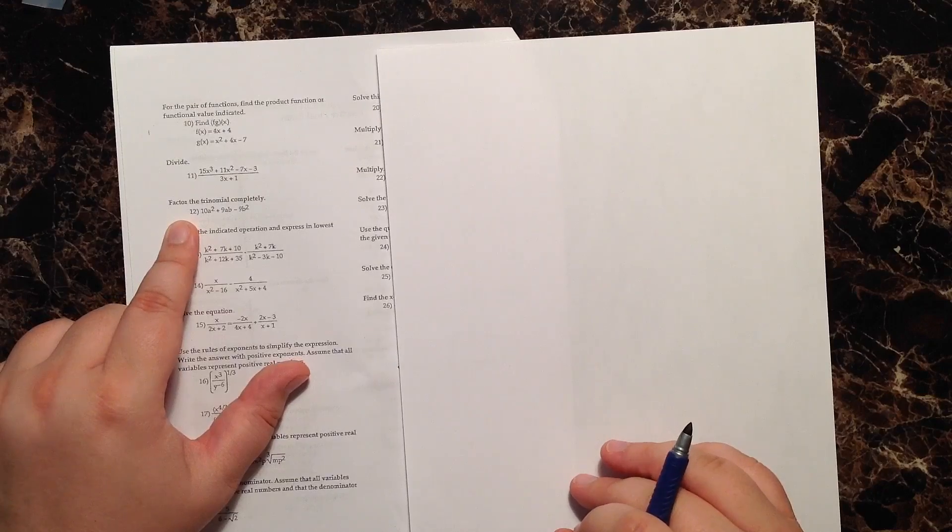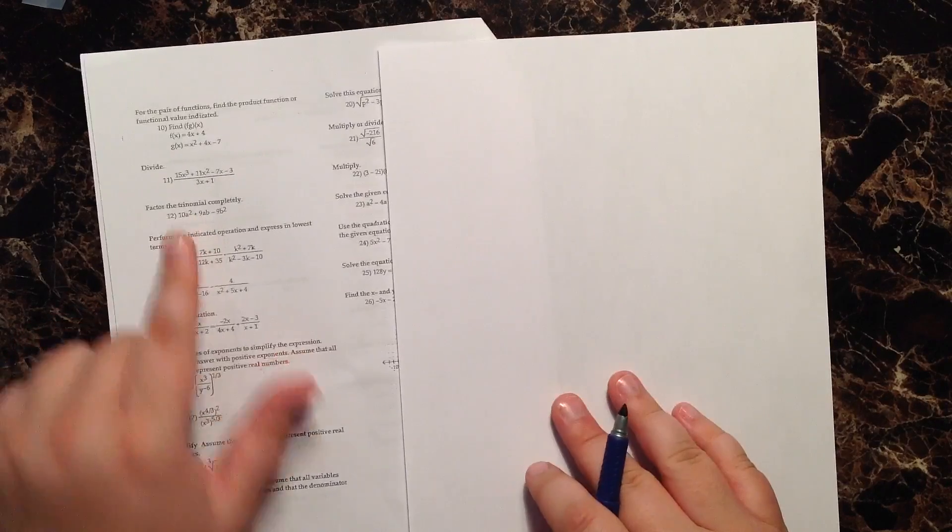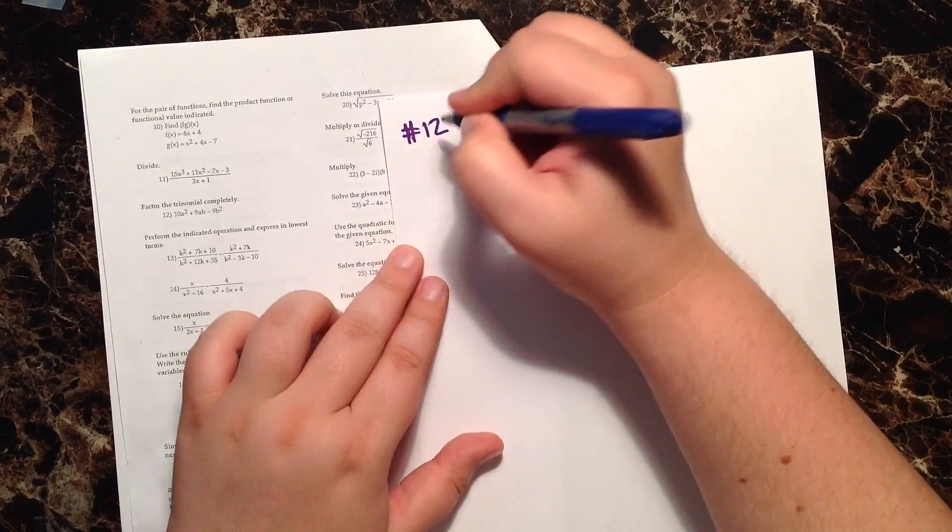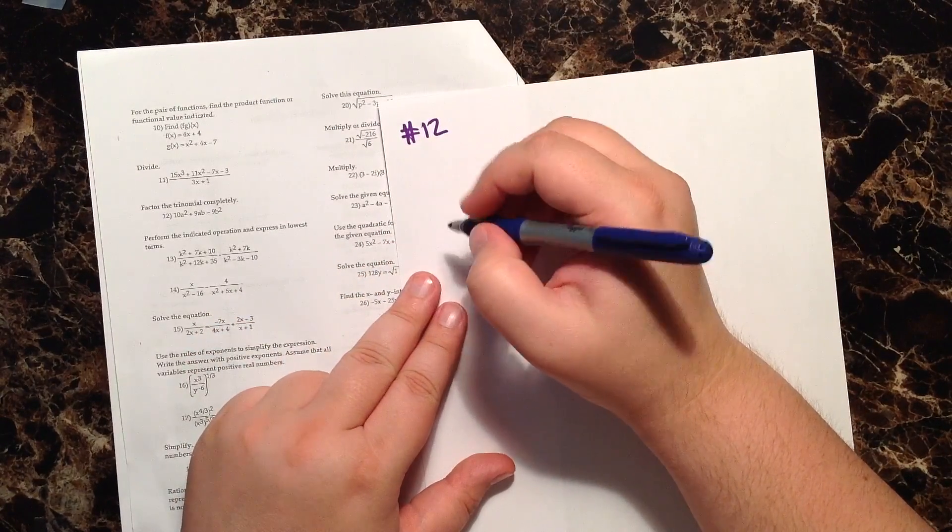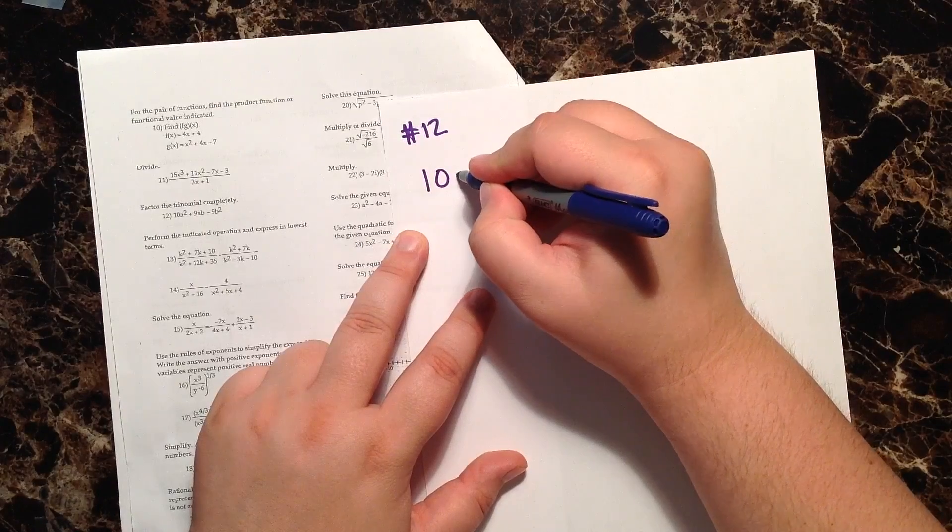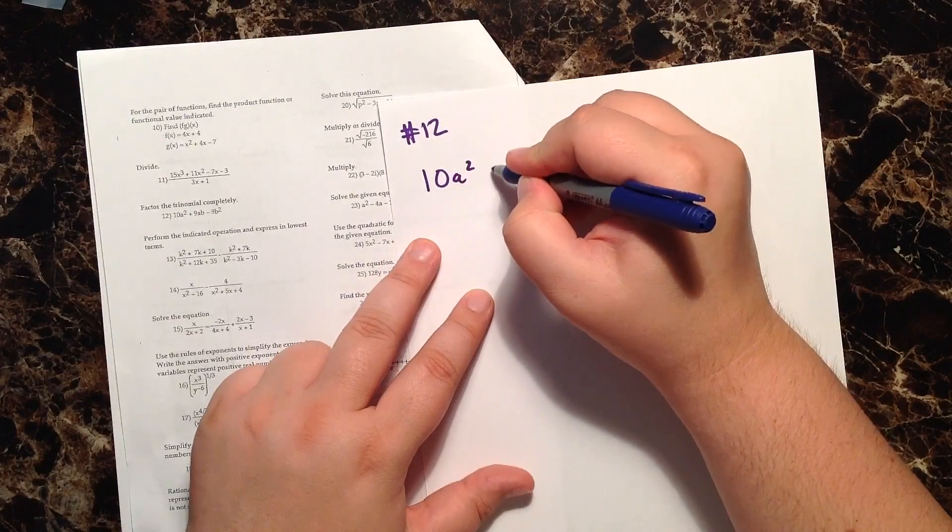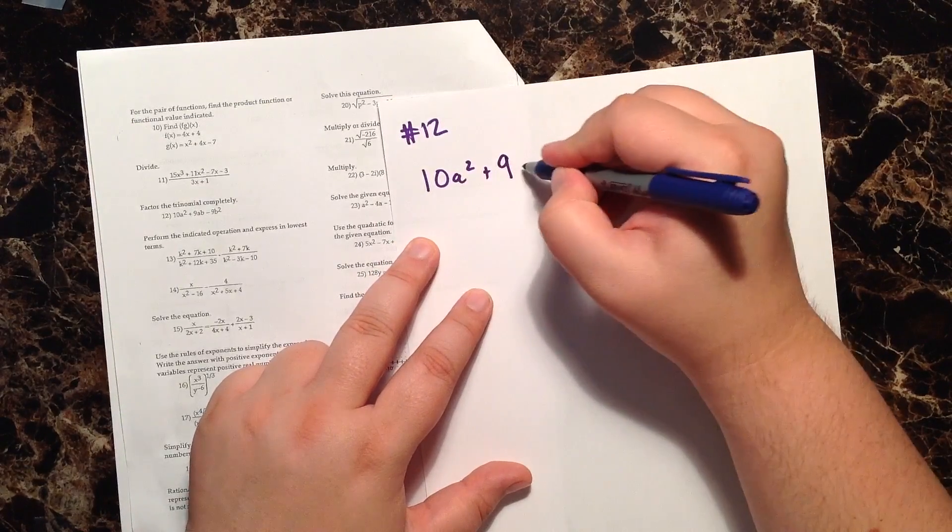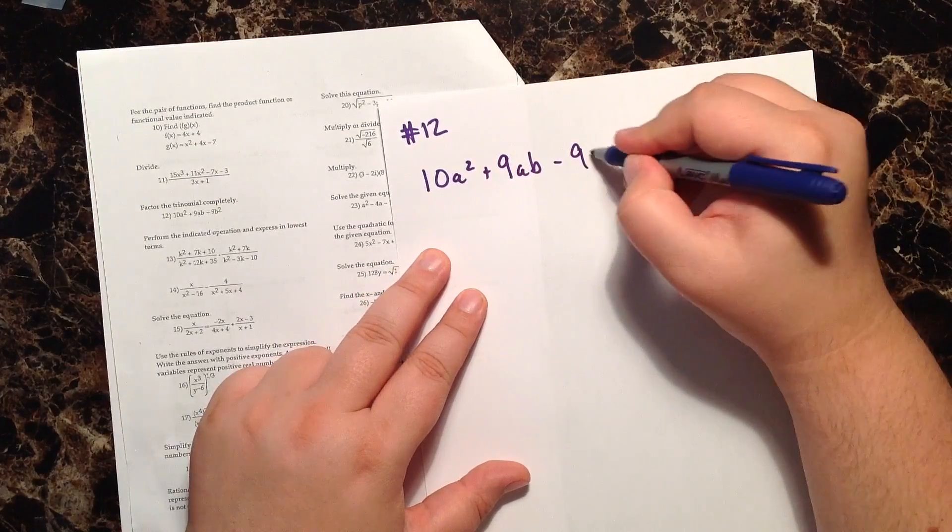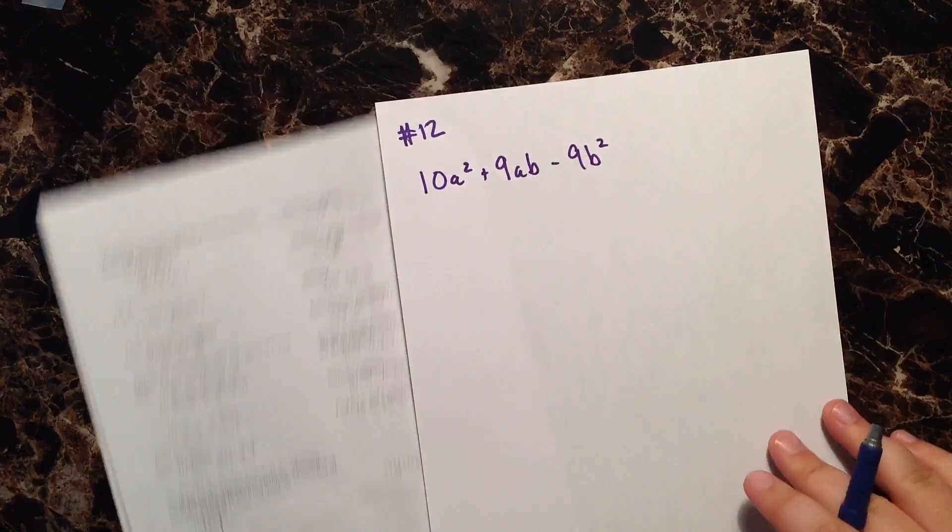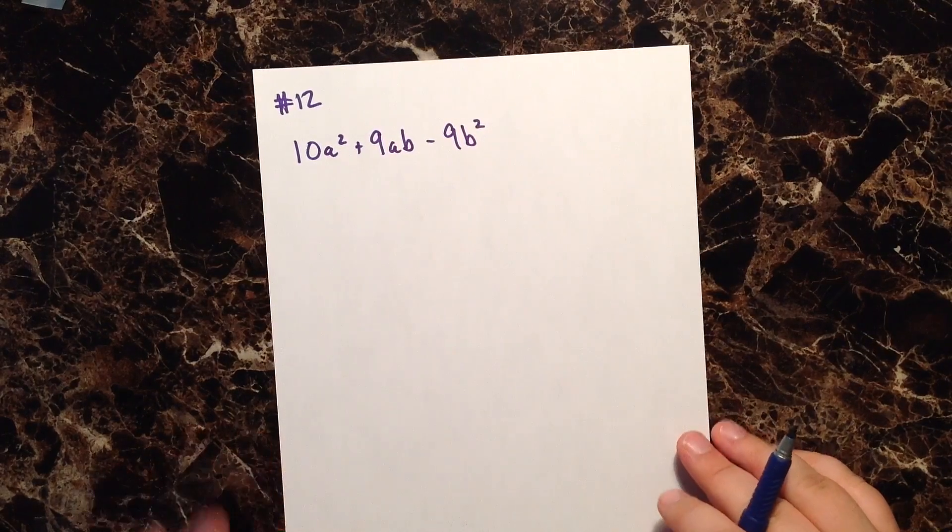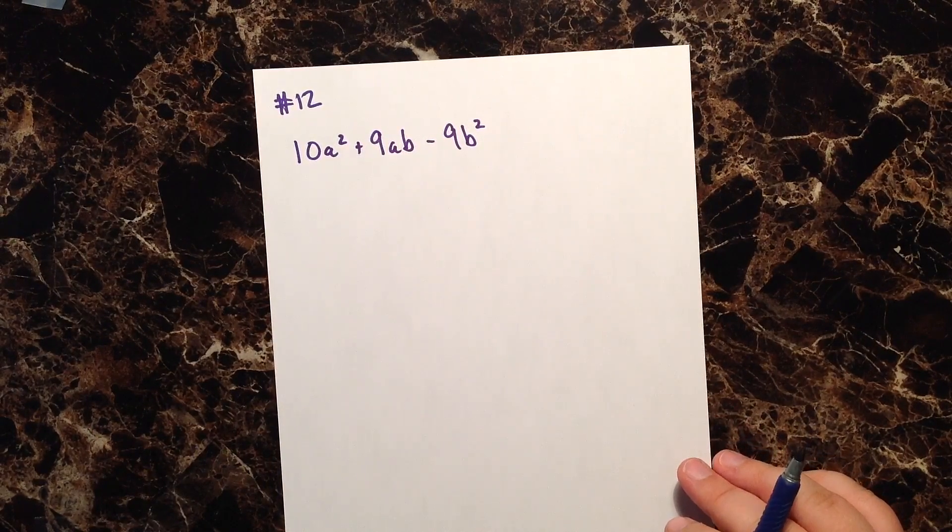Question number 12, directions say to factor the trinomial completely. The trinomial they give us to factor is 10a² + 9ab - 9b². So we'll go ahead and put our practice to test and factor this trinomial.